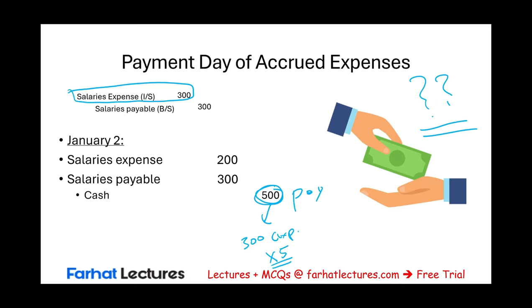Do you record it in January when the bill is received? No — that's irrelevant. Record the expense in December as it's incurred — that is the matching principle. And accrued expenses, remember, when we talked about adjustments, the purpose of adjustments is to make sure we comply with the matching principle. Do not record the expense only when payment is made — that's the cash method. Record the expense in the month it was incurred, even if you must estimate the amount.